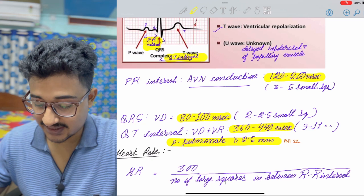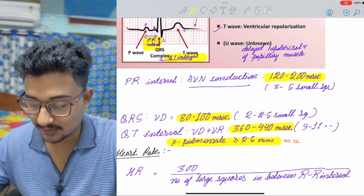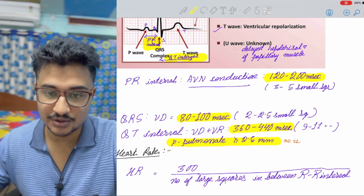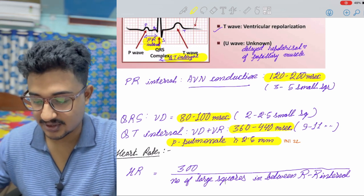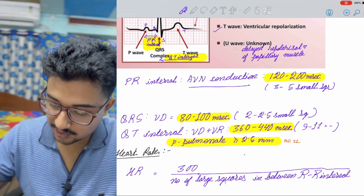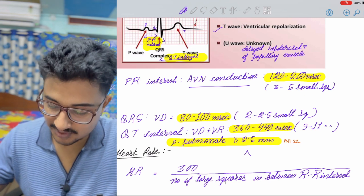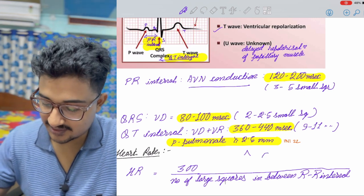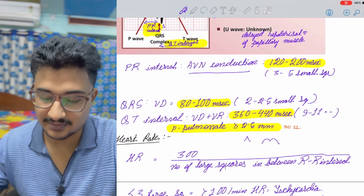QRS is ventricular depolarization and it is 80 to 100 milliseconds. And QT is ventricular depolarization and ventricular repolarization and it is 360 to 440 milliseconds or 9 to 11 small squares. One important question that has come is the P pulmonale that is more than equal to 2.5 mm. This came in INICT 2022. P pulmonale means P-wave height more than 2.5 squares. P mitral shows bifurcation of the P-wave.